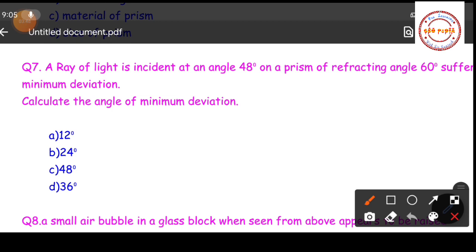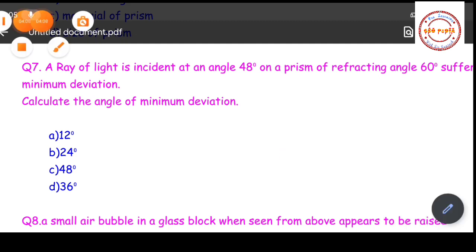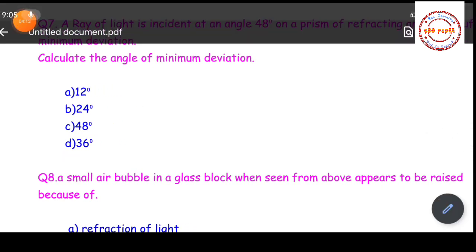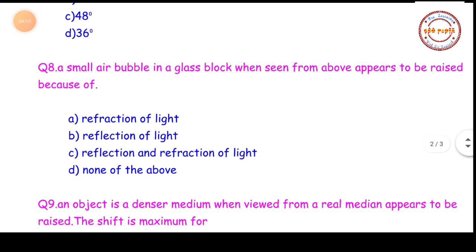Question number seven: a ray of light is incident at an angle of 48 degrees on a prism of refracting angle 60 degrees and suffers minimum deviation. You have to calculate the angle of minimum deviation. When you calculate it, you get 36 degrees, so option D is the correct answer.